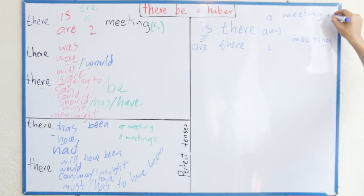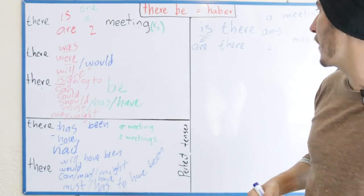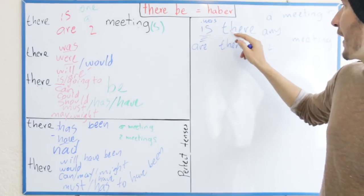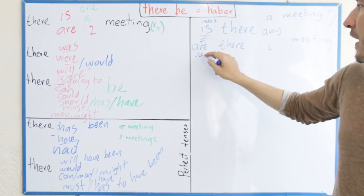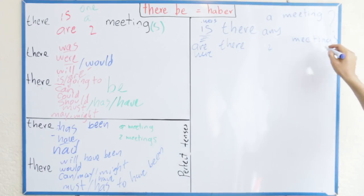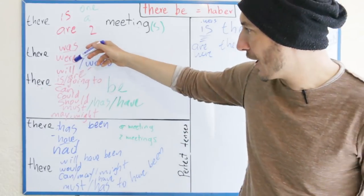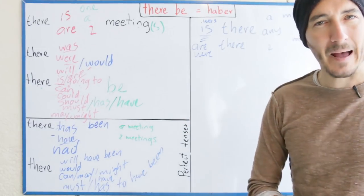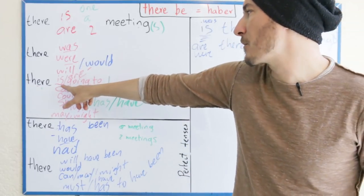Hay dos reuniones — recuerden que si no hay interrogación, ese es básico con el verbo 'to be'. En el pasado: hubo una reunión — was there a meeting? O was there any meeting? En plural: were there any meetings? O were there two meetings? Para el resto, cuando no está el verbo 'to be' — por ejemplo el 'will', y esos modales o auxiliares como will, can, should, must, may, might, would — ese es el que pongo siempre adelante.